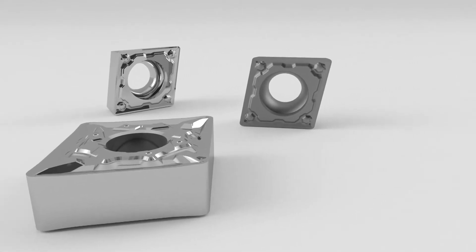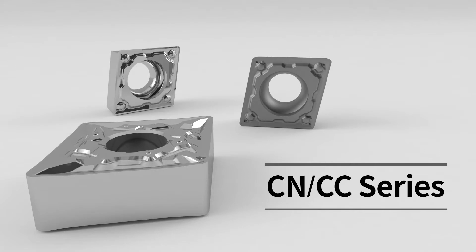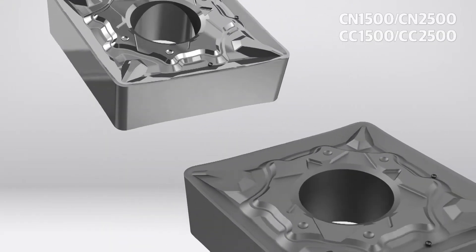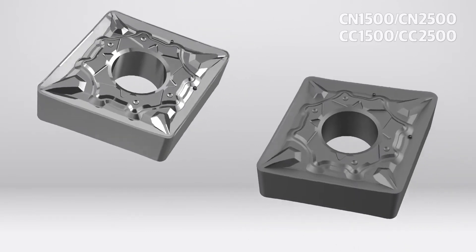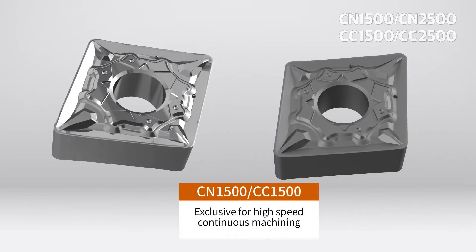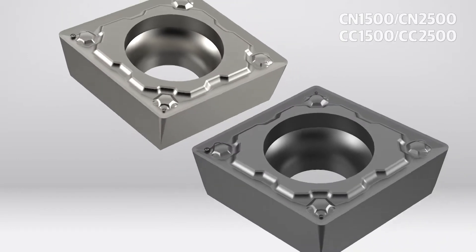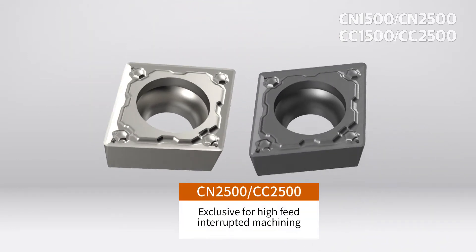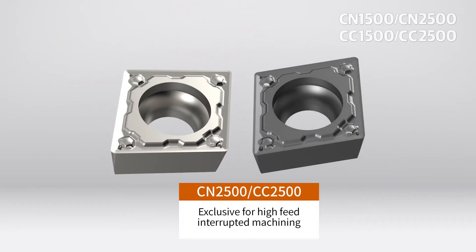Corloy's turning CERMED series has improved performance and a longer tool life with diverse processing conditions and workpieces. The CN1500 and CC1500 were developed for high-speed and continuous cutting conditions, and the CN2500 and CC2500 for high feed and interrupted cutting conditions.